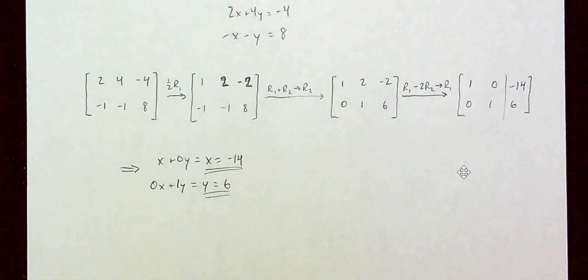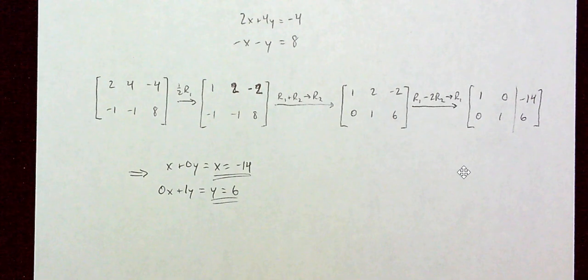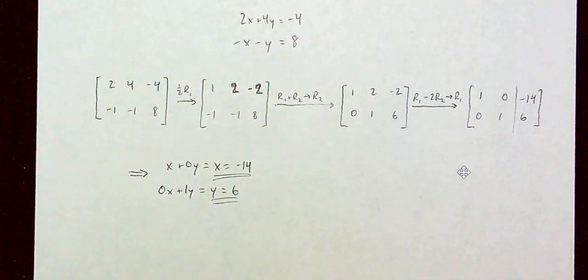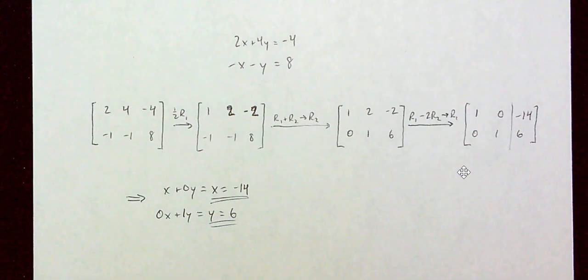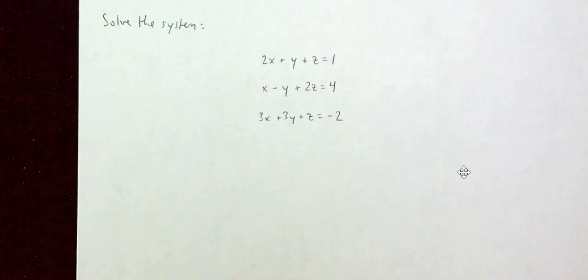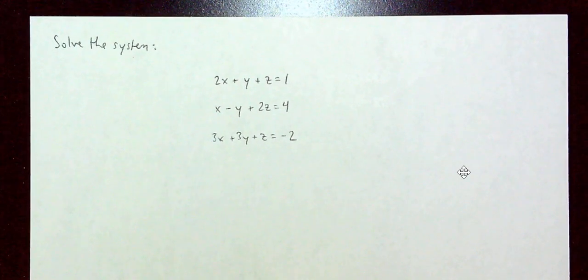There we go. Working with a system of two linear equations and two variables — not that bad. The next one we're going to work on we won't fully finish; it's more to give practice with row operations and to show what solving a system of three linear equations in three variables looks like. It's not as fun — spoilers.